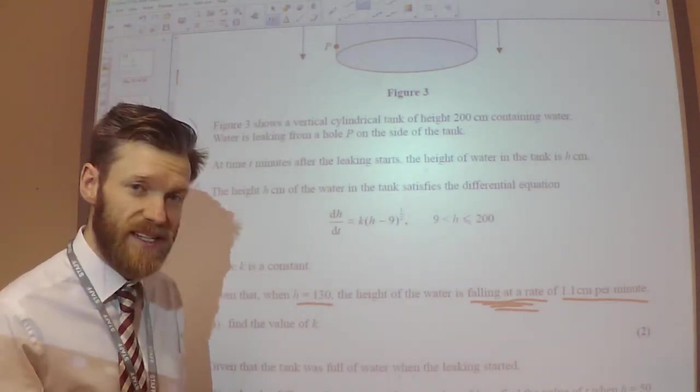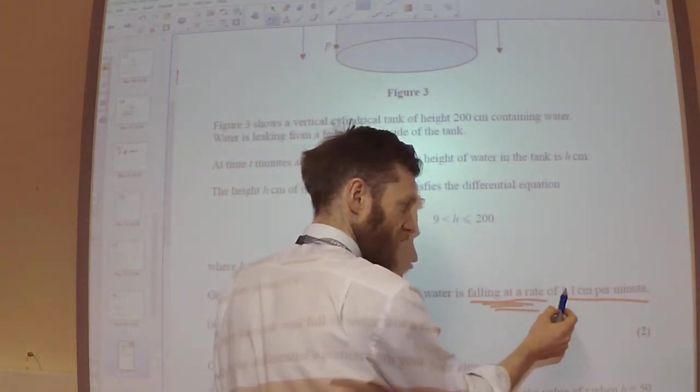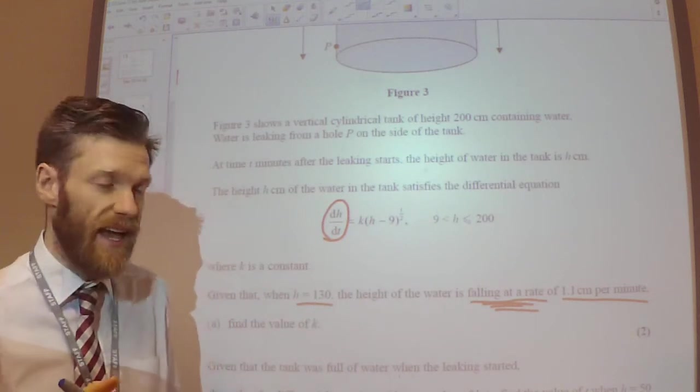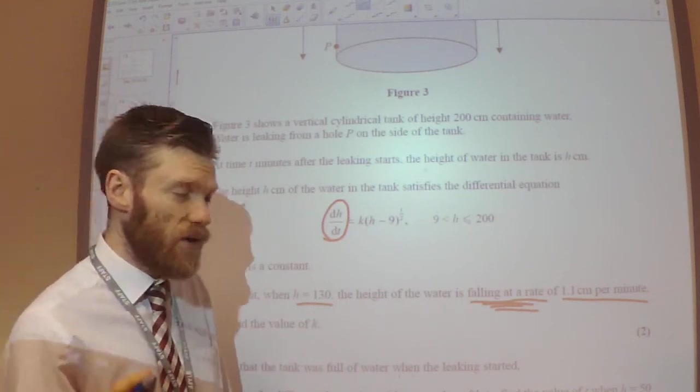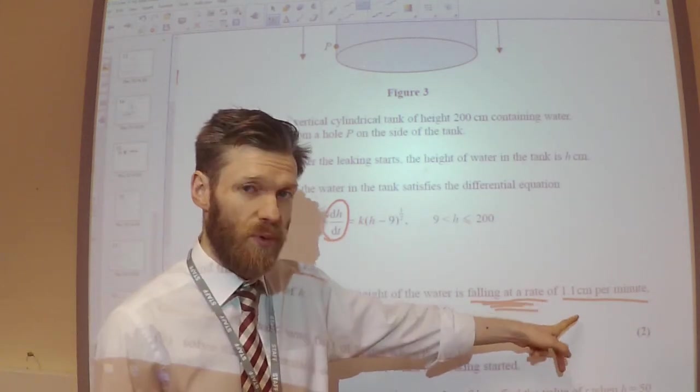So what that is saying, I think most of you realize that rate is in relation to the DH by DT. So I think most of you have written DH by DT is 1.1.